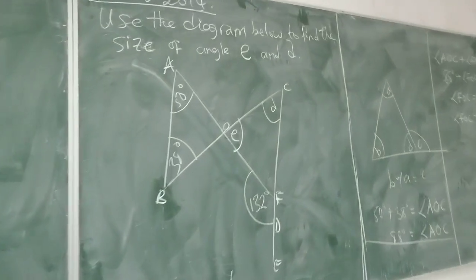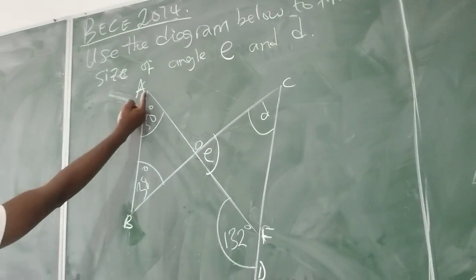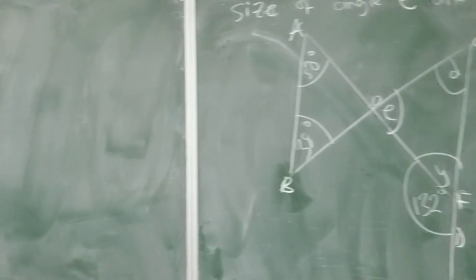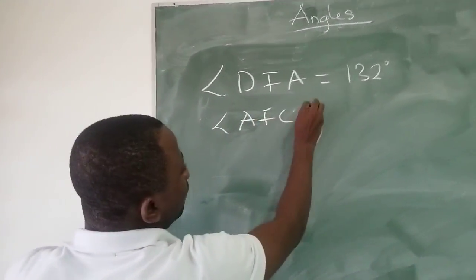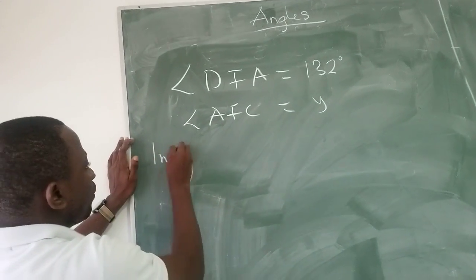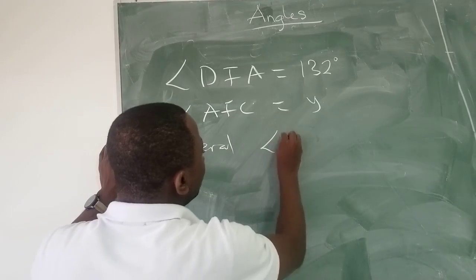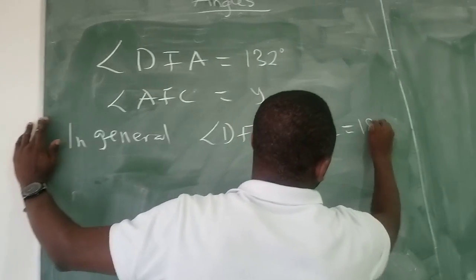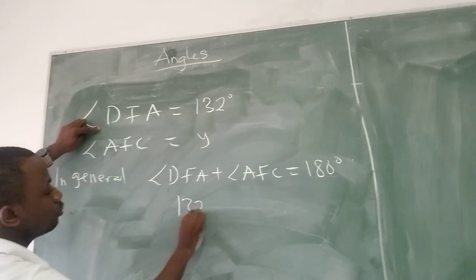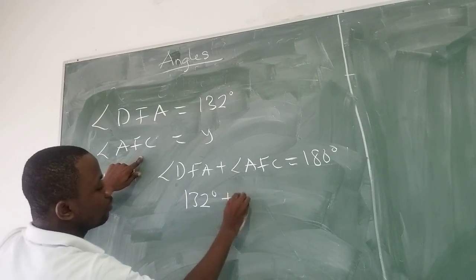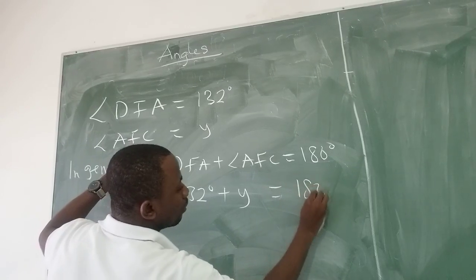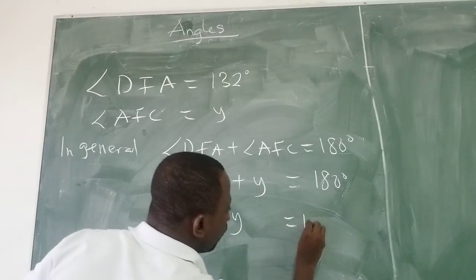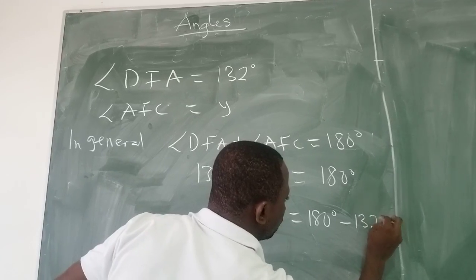We can also find the size of angle AFC, which we are representing as Y. So angle AFC is equal to Y. In angle DFA, 132 degrees plus angle AFC (Y) — so how do we find Y? Y is equal to 180 degrees minus 132 degrees. This gives us 48 degrees. Therefore angle AFC is equal to 48 degrees.